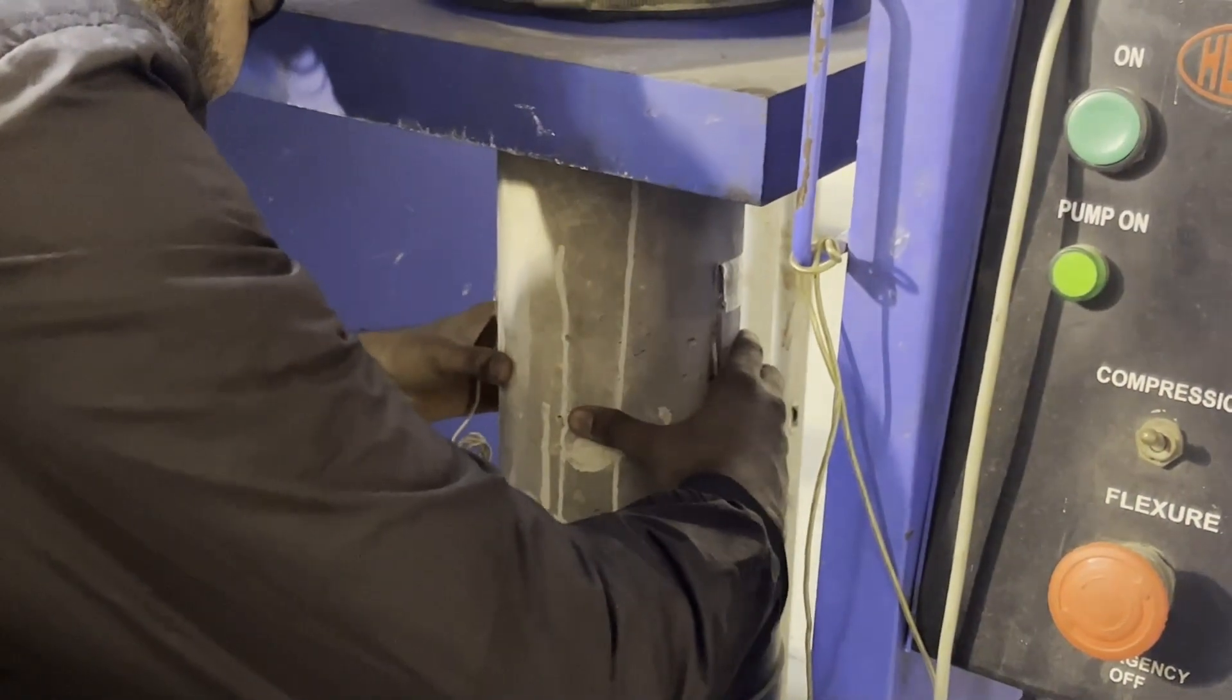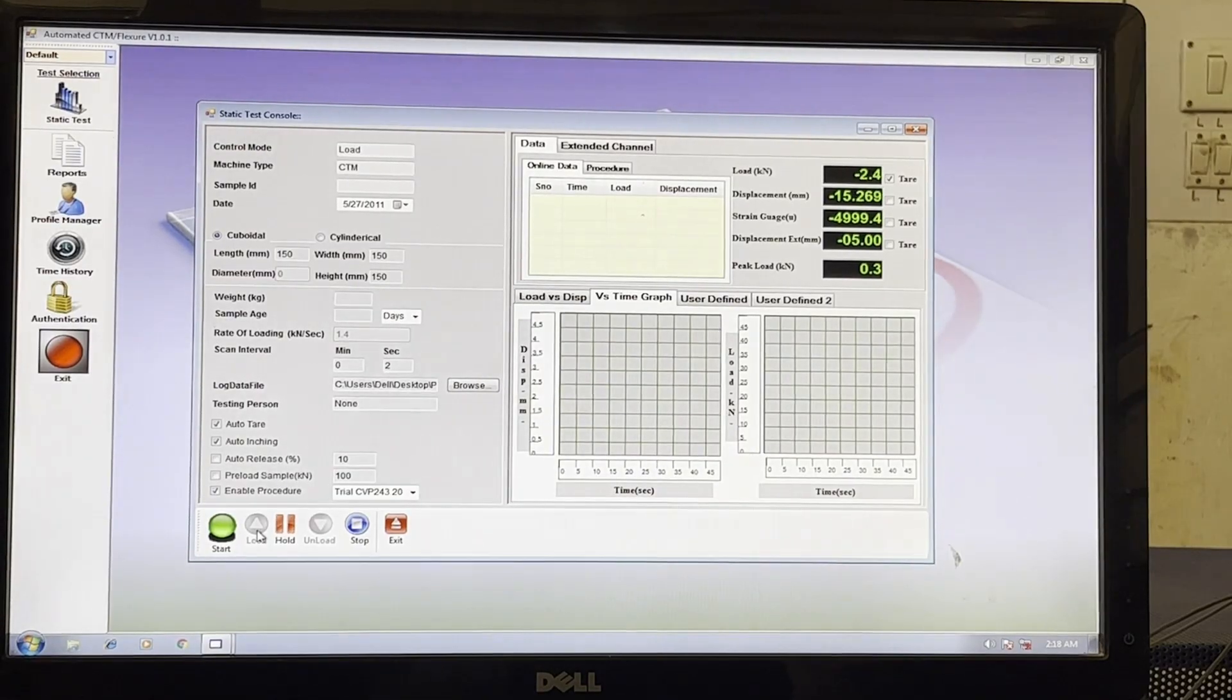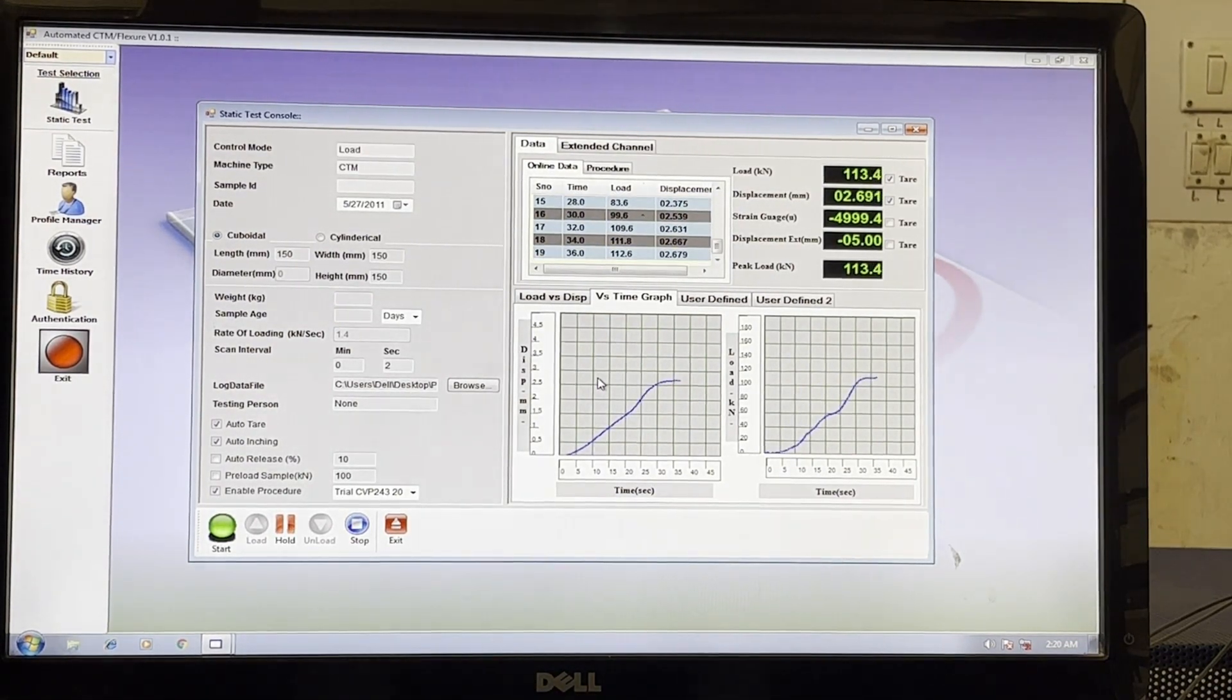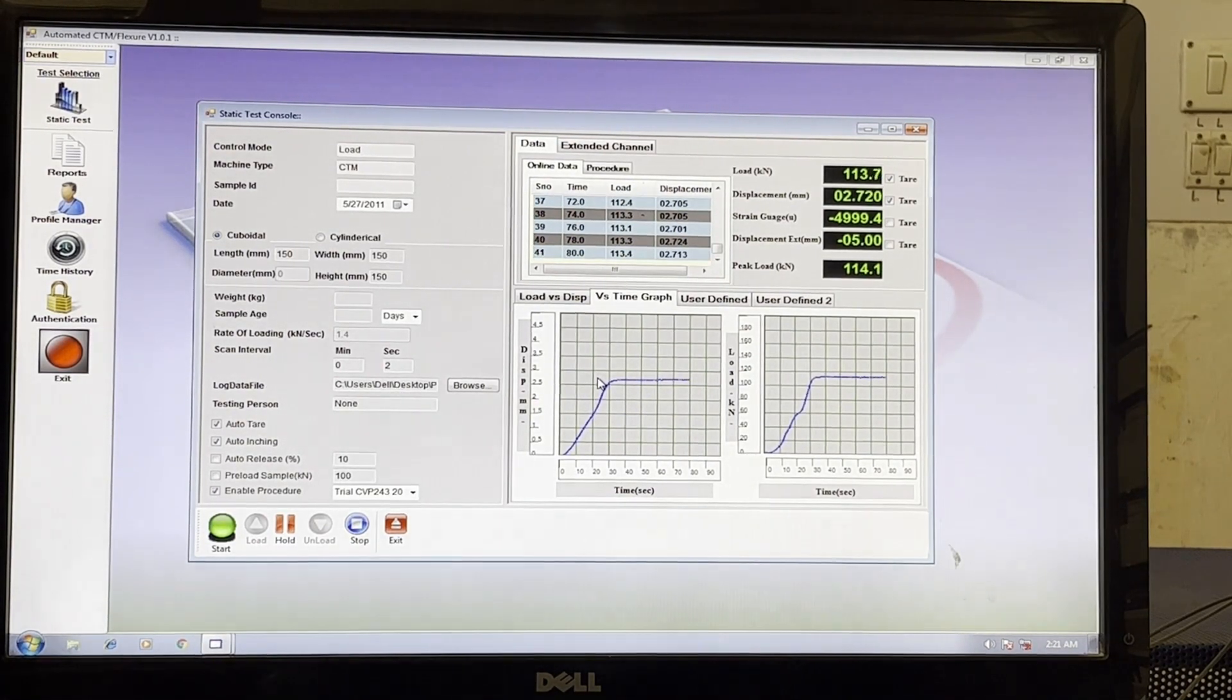Place the test specimen at the center of the machine. Apply the load continuously and without shock at a rate of 4.12 kN per second until stress reaches FC by 9, sigma B, and maintain for 60 seconds.